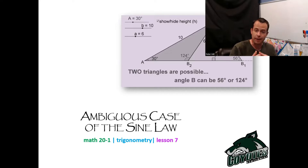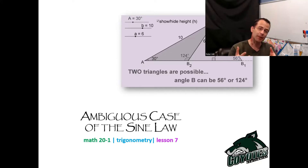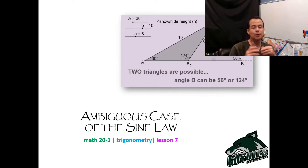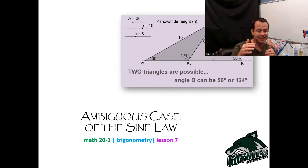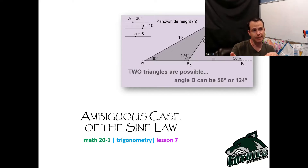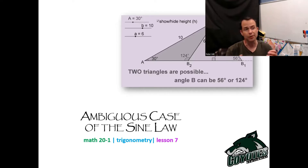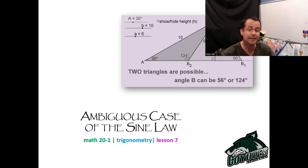In the ambiguous case of the triangle with the sine law, what happens is we give you information, but that information could actually form two different triangles. As we go through this note, I'll walk you through scenarios and rules around if the length is this much in comparison to the height — you have the ambiguous case — but if it's longer than another side, you won't have it and you'll only have one triangle. We don't want to get bogged down by those rules. To start, I'd like to walk you through the cases visually without any math.